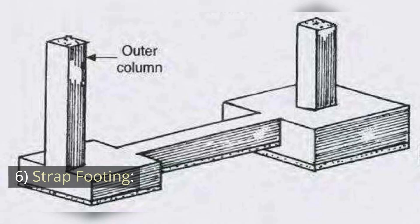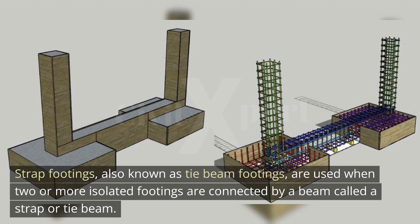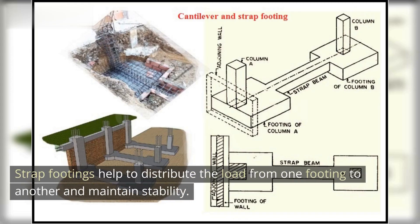6. Strap Footing: Strap footings, also known as tie beam footings, are used when two or more isolated footings are connected by a beam called a strap or tie beam. Strap footings help to distribute the load from one footing to another and maintain stability.